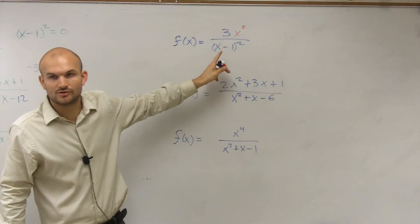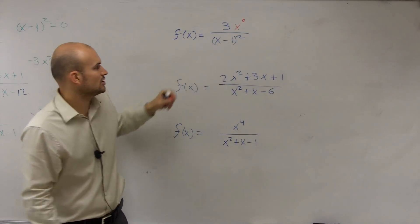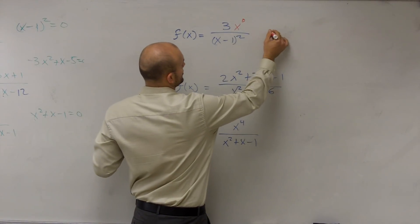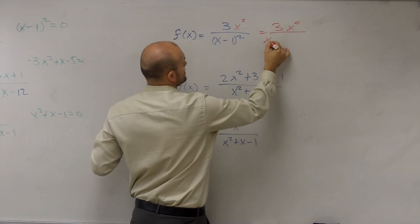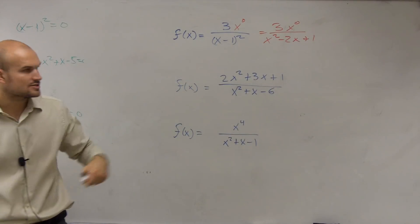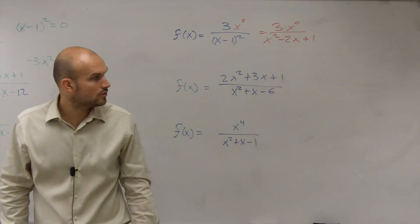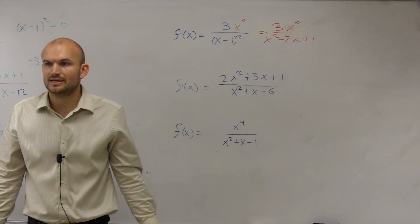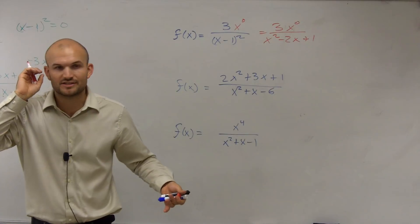What would be the degree of this? You'd have to foil it out, but you can notice that the degree of this when multiplied out is really, so we could rewrite this as 3x to the 0 times x squared minus 2x plus 1, if you foil it out. So now make sure it's in descending order. So looking at that, which degree is larger, in my numerator or in my denominator, the leading, or with the degree of each polynomial? Which one is larger?